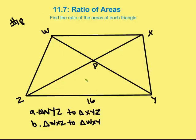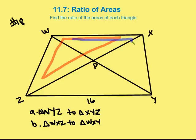And in the next problem, in B, we have WXZ to WXY. And again, we have the same base area and the same height. So both A and B have a relationship of areas of one to one.